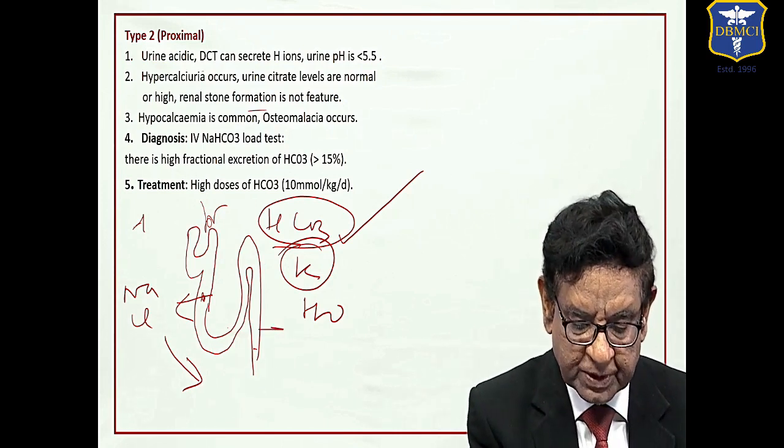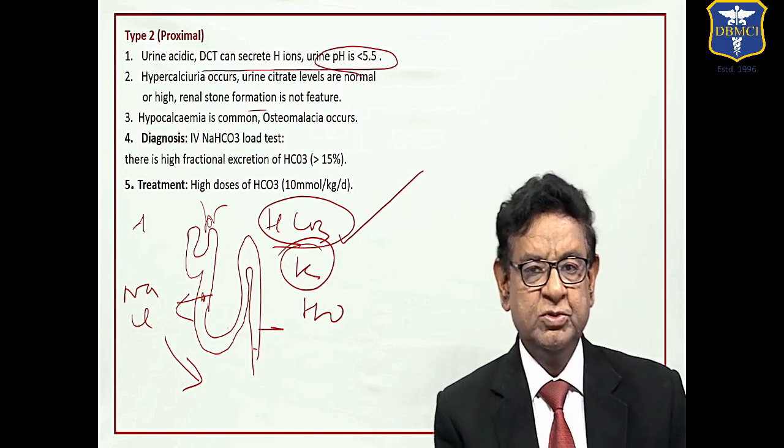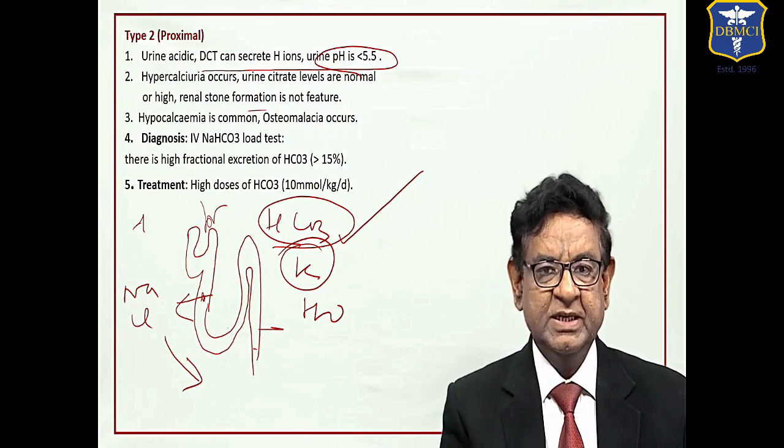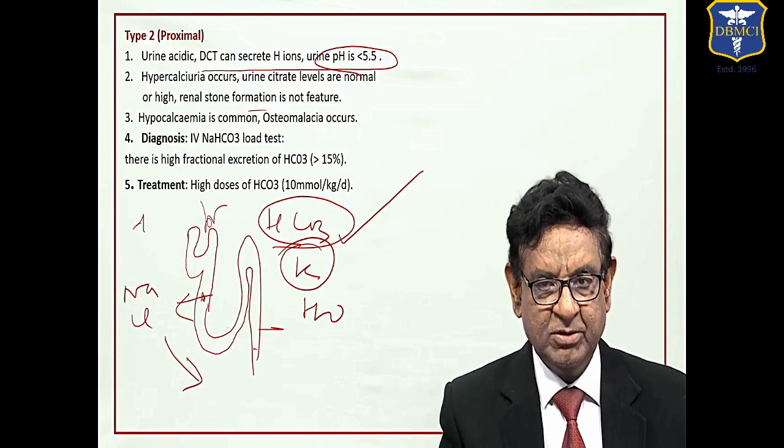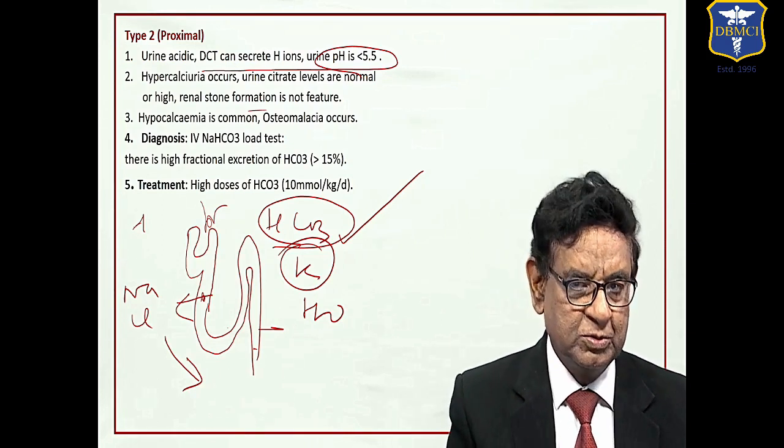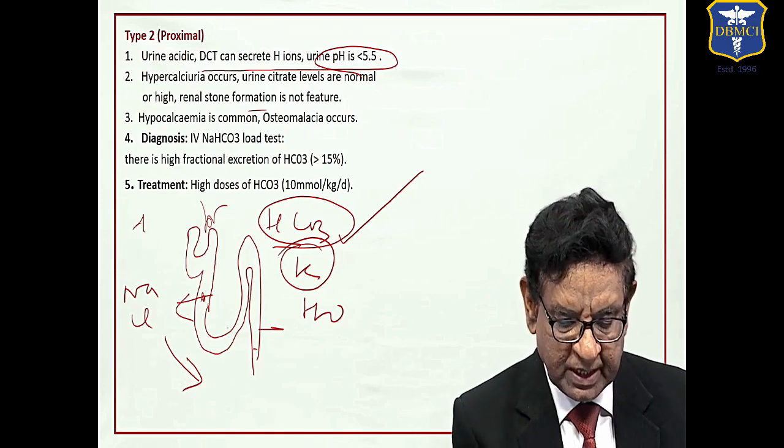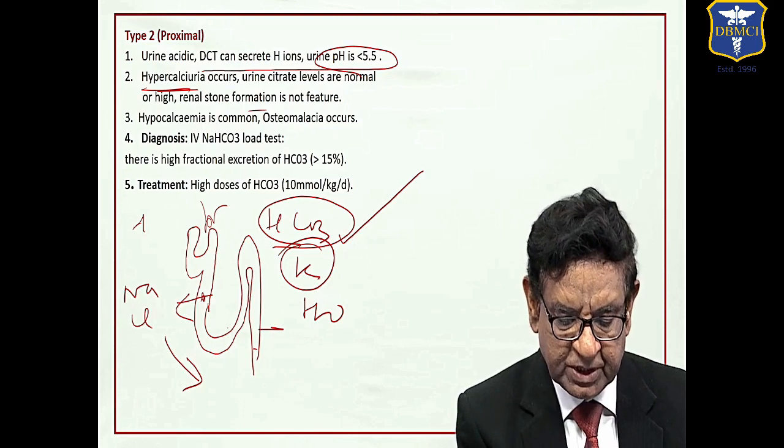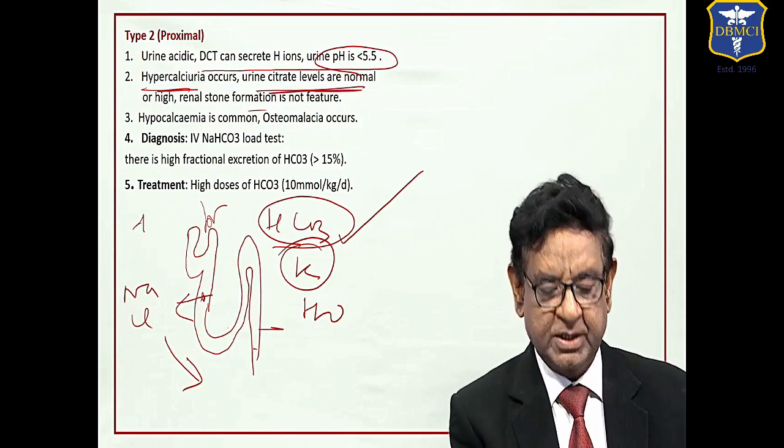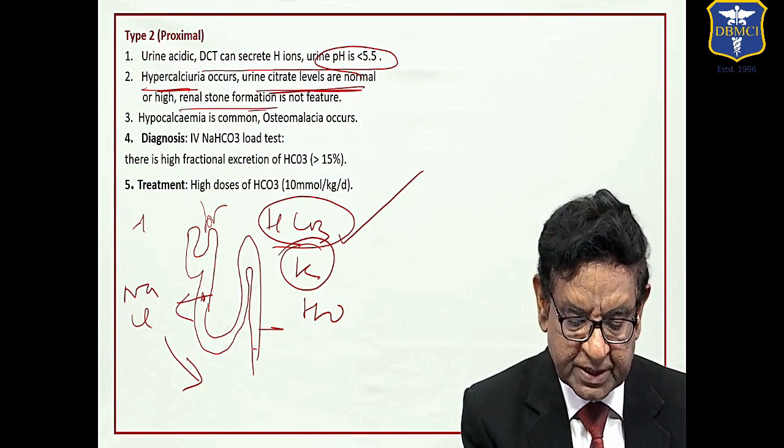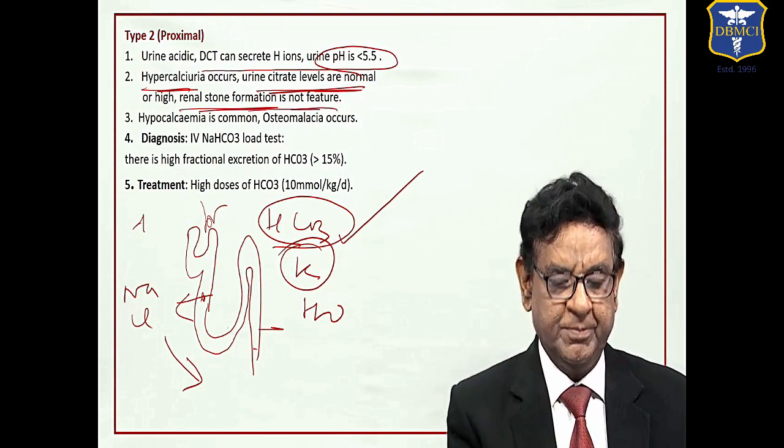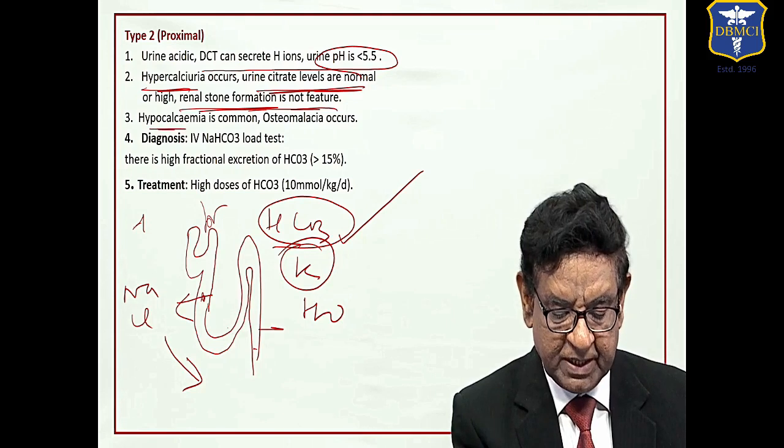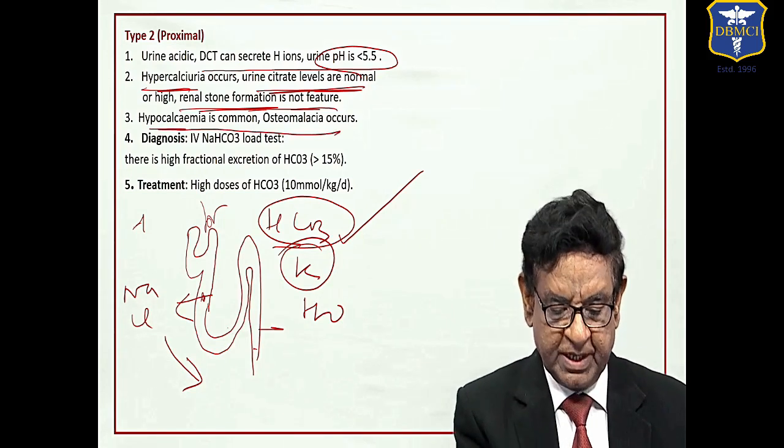But DCT can very well secrete H ions. Urine pH is usually less than 5.5. Of course in the initial stages it may be on the higher side also, but finally it goes to below 5.5. Hypercalciuria occurs, but since urine citrate is normal, renal stone formation is not a problem. Due to hypercalciuria there is hypocalcemia which leads to osteomalacia.